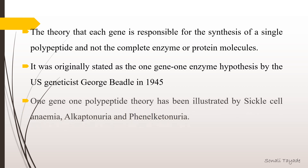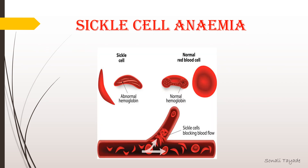The 1 gene 1 polypeptide theory has been illustrated by sickle cell anemia, alkaptonuria, and phenylketonuria. We will discuss each one by one.